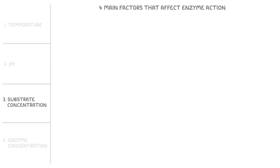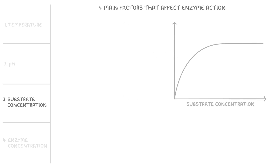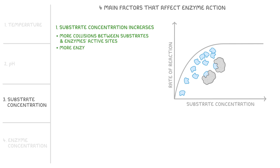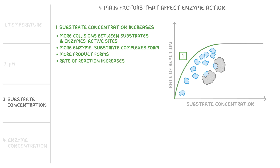Moving on to substrate concentration, let's look at how this impacts these reactions using a graph of substrate concentration against rate of reaction. As substrate concentration increases initially, there are more substrate molecules available, and so there are more collisions between these substrates and the enzyme's active sites. This means more enzyme-substrate complexes form, and so more product forms over the same period of time, meaning the rate of reaction increases.